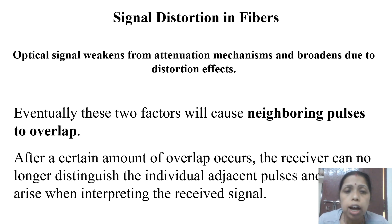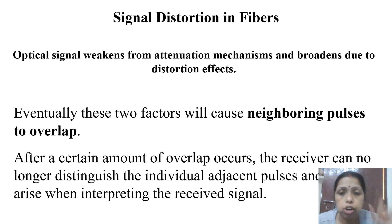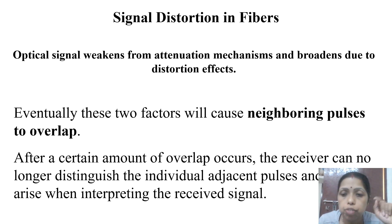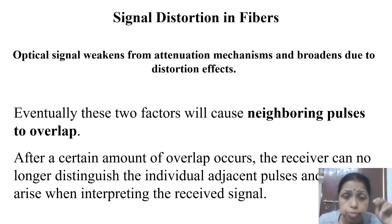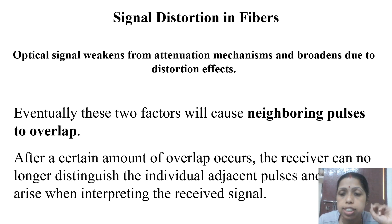Attenuation refers to degradation in the signal level or amplitude. If there is a degradation in the amplitude of any signal, that is called attenuation. In optical fiber, the next important phenomenon is signal distortion, also called dispersion.